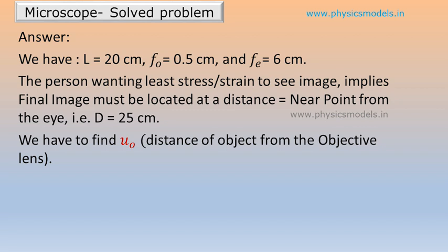Now, when the observer wants to see the image at the best distance for least stress, it means that the final image must be at the near point from the eye, that means capital D is 25 centimeters. That holds true whether we look at a mobile or we look at a book.